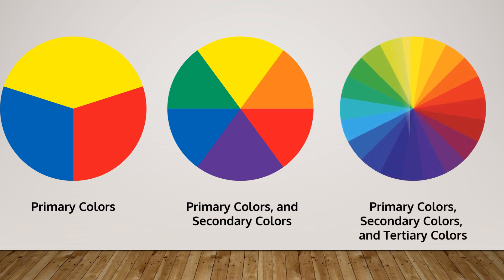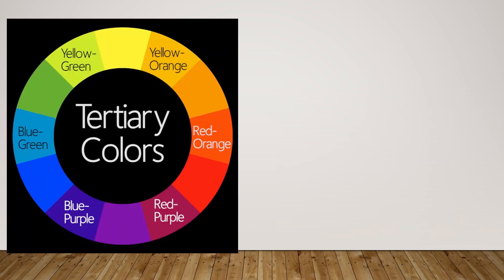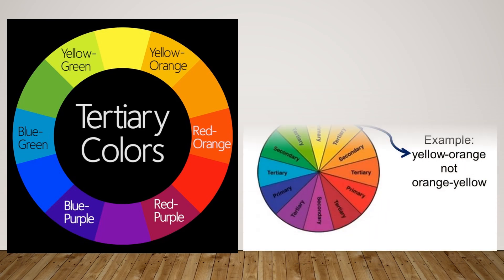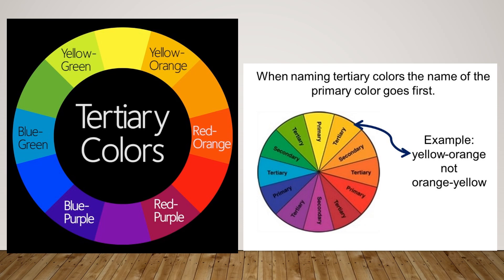Tertiary colors are what you get when you mix primary and secondary colors together. There are six tertiary colors in total, and you have to remember when naming them that you use the primary color name first and then the secondary color name that you mixed it with. For example, if you mix yellow and orange together, the tertiary color is called yellow orange. It is interesting and really important to know the colors and their names as an artist, because then you know how to create the colors you want to use in your pieces of art.